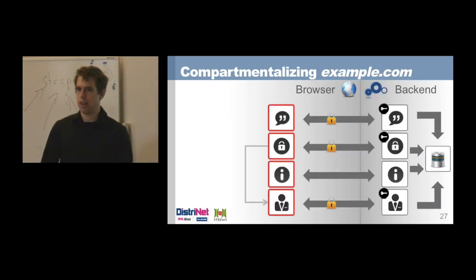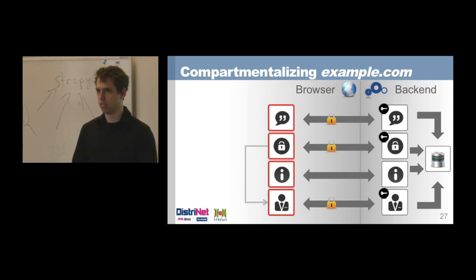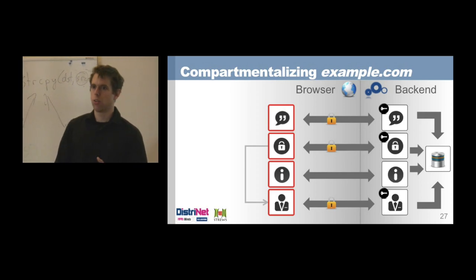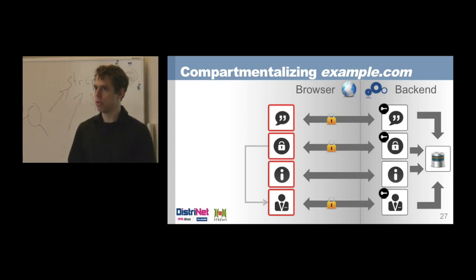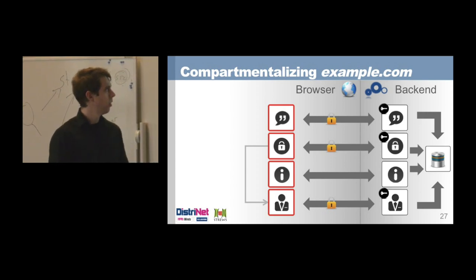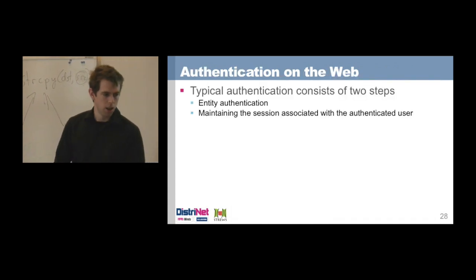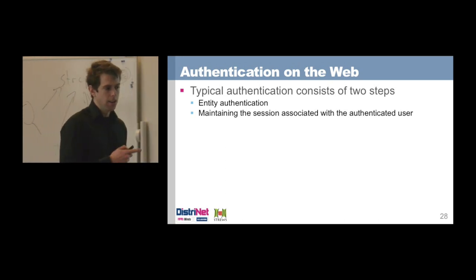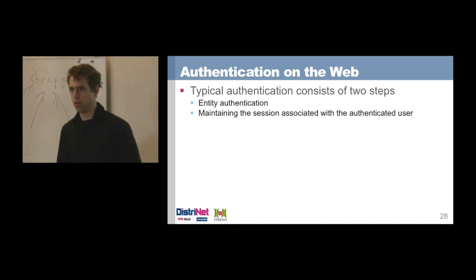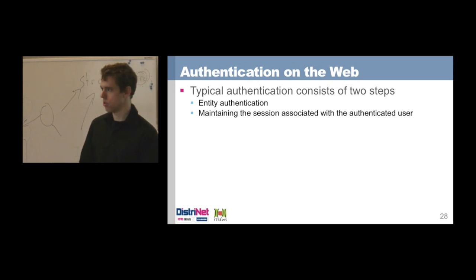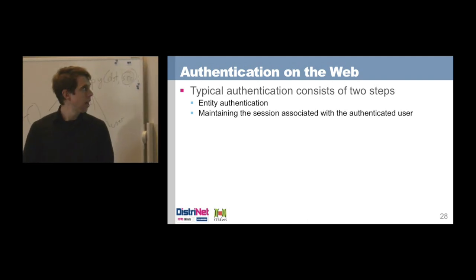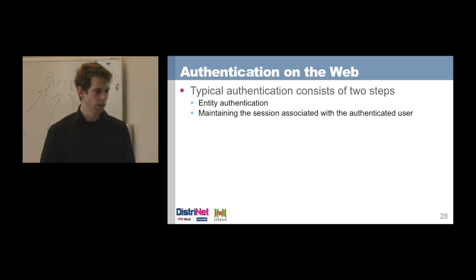Now we have different compartments. The next step is authentication across these parts without requiring the user to re-login every time. Authentication on the web has two steps: first, entity authentication — knowing who the user is — and second, session management, because HTTP doesn't know which requests belong together. We use session identifiers to associate requests with an authentication state. Entity authentication — username and password, challenge-response systems, client-side certificates like on your eID — won't be covered in detail as it has little influence on browser security policies.